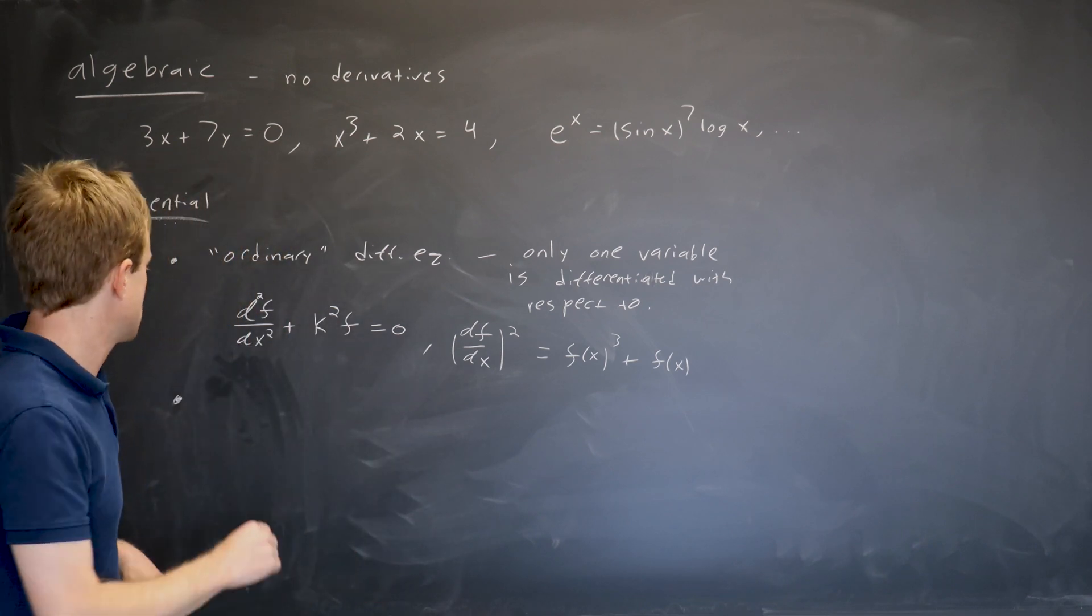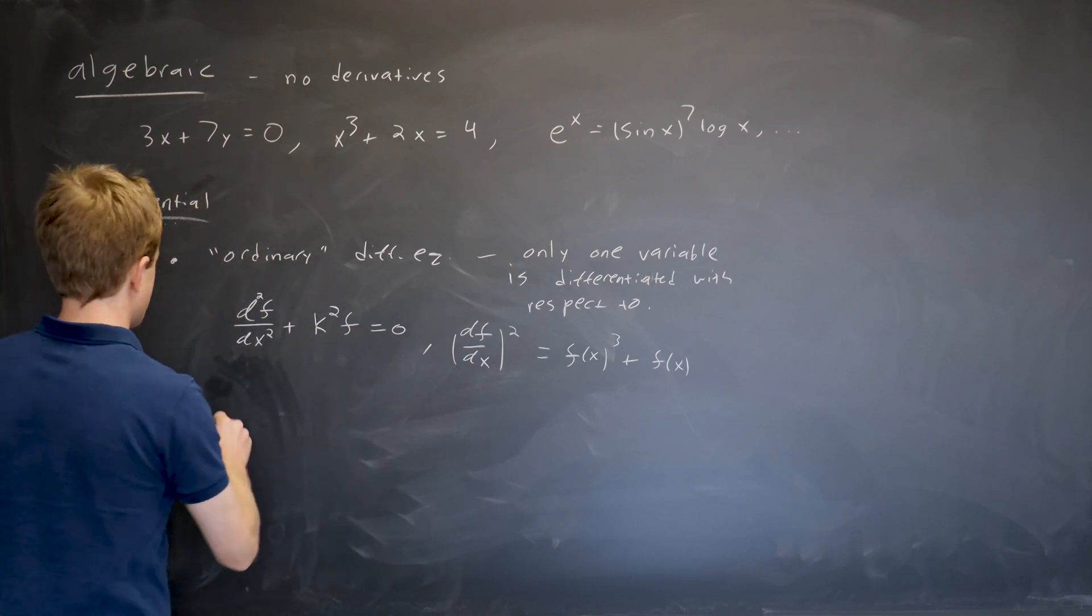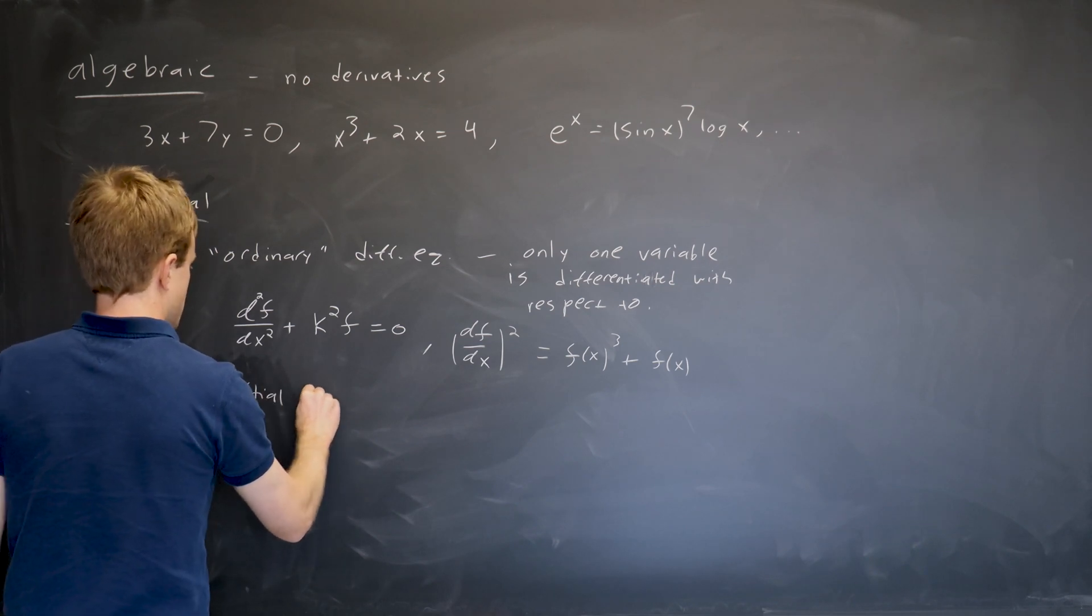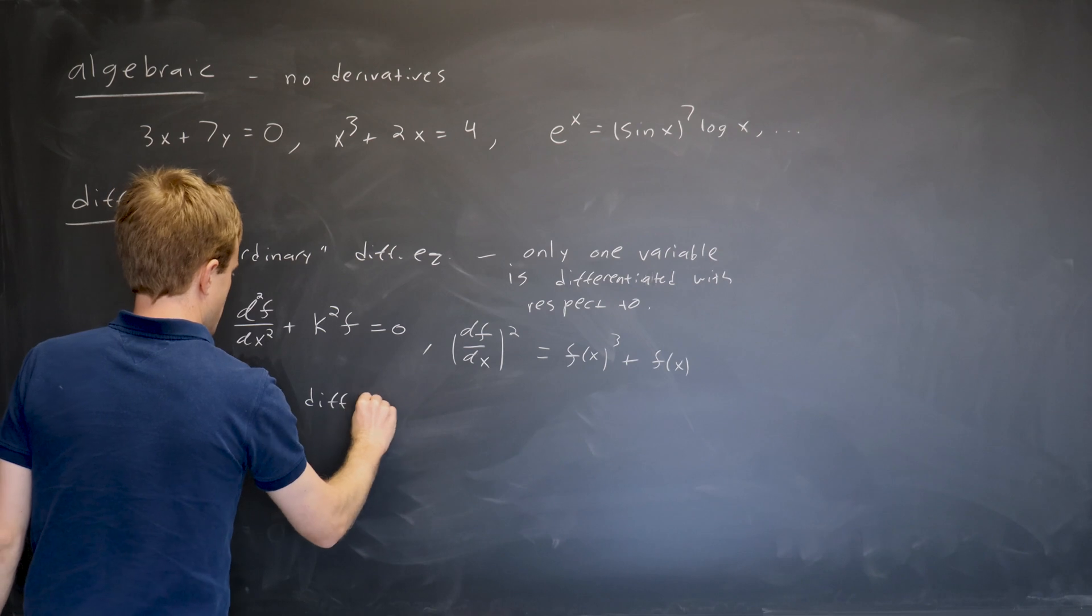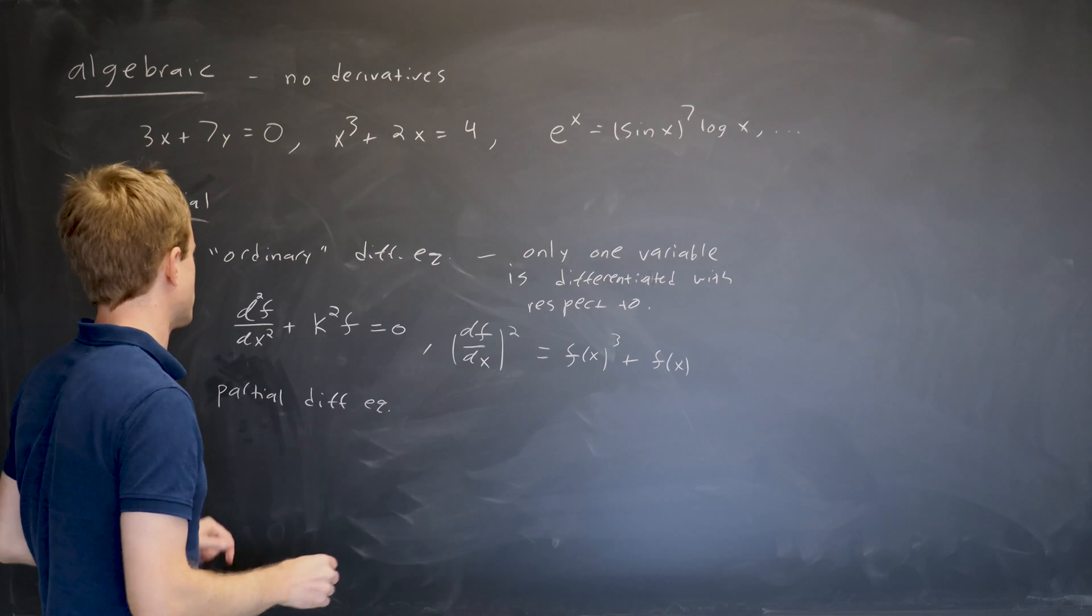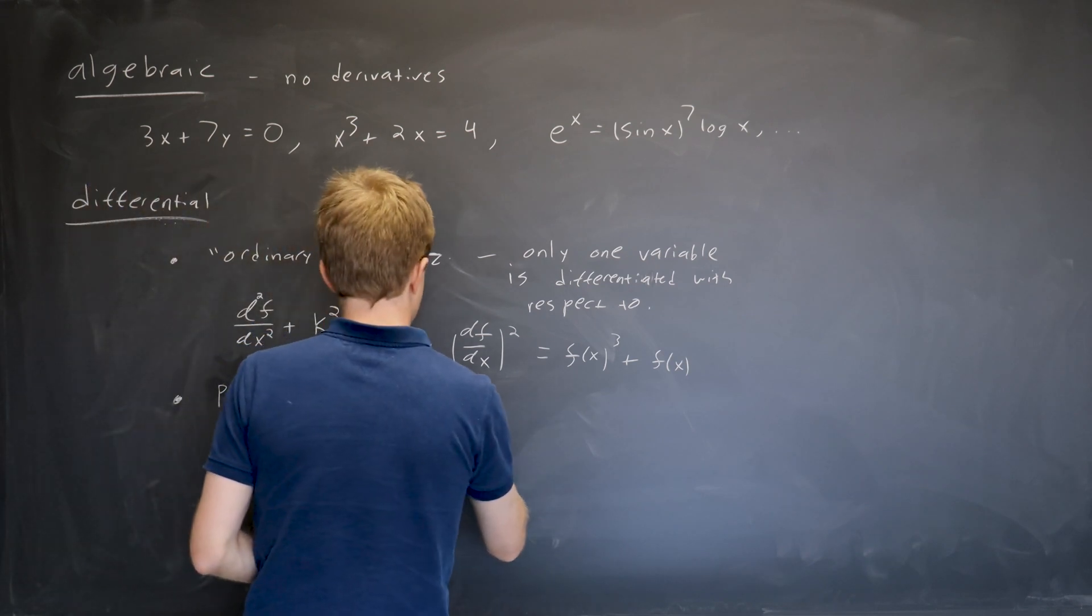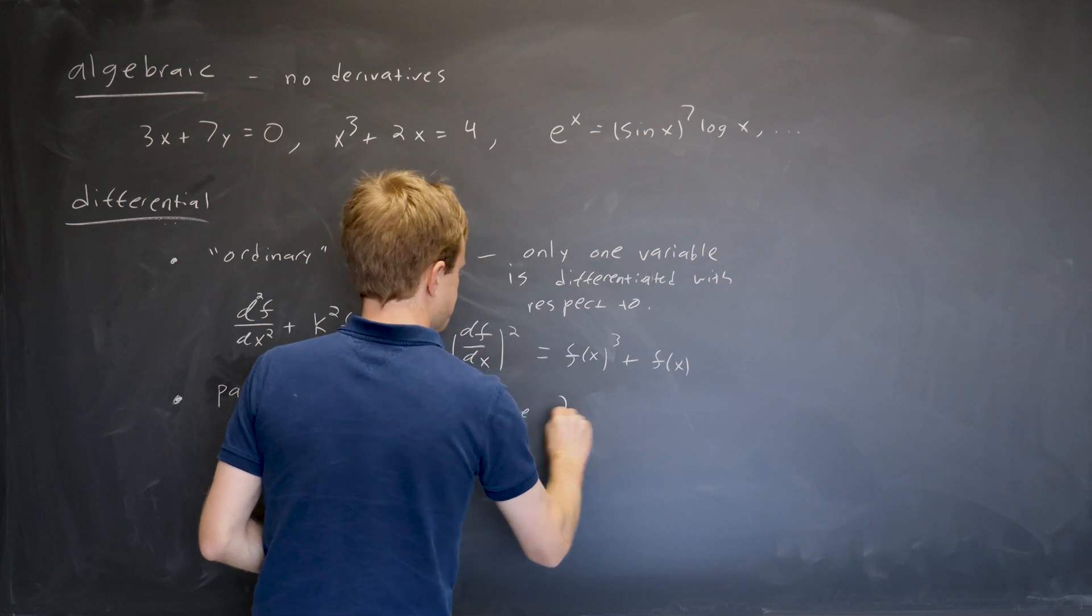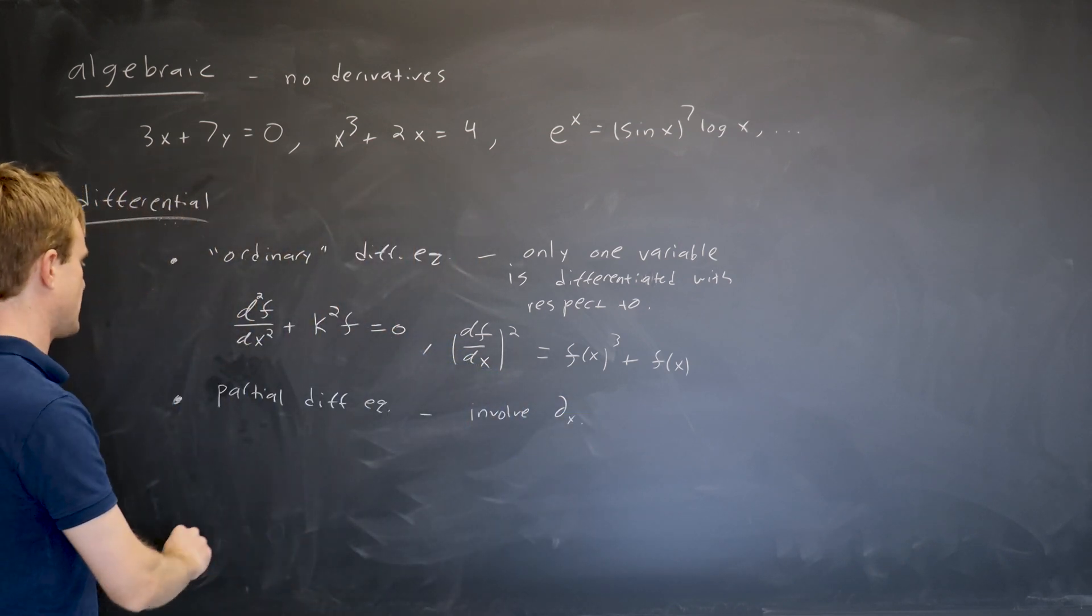So, a partial differential equation is just one where not only do you have an x derivative, you have like a y derivative too or something. You have partial derivatives, so, you know, these involve partial. So, here's a good example.